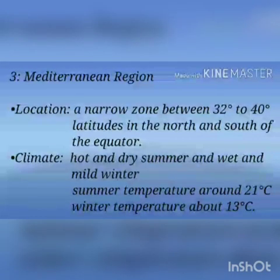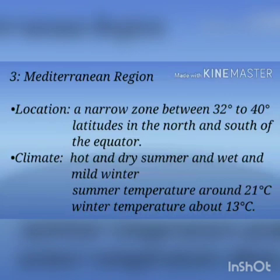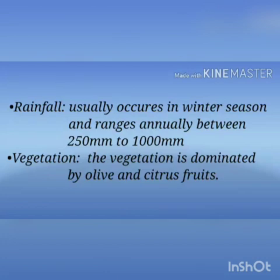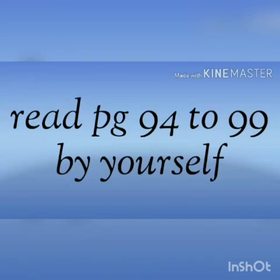The third region is the Mediterranean region. Location: this region is a narrow zone between 32 degrees to 40 degrees latitudes in the north and south of the equator. Climate: the climate is hot and dry in summer and wet and mild in winter. Summer temperature is around 21 degrees centigrade while winter temperature is about 13 degrees centigrade. Rainfall: rainfall usually occurs in winter season and ranges annually between 250 mm to 1000 mm. Vegetation: the vegetation is dominated by olive and citrus fruits.